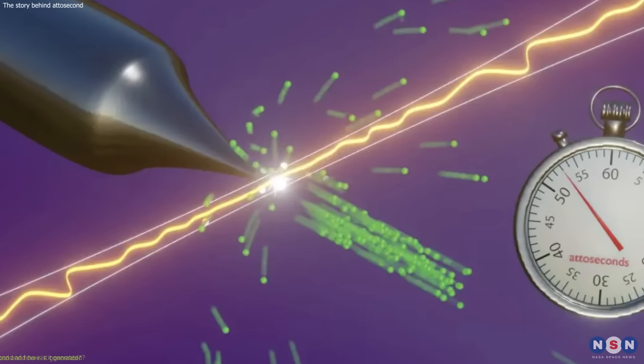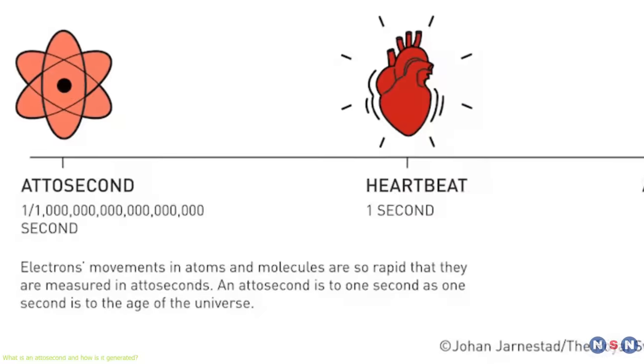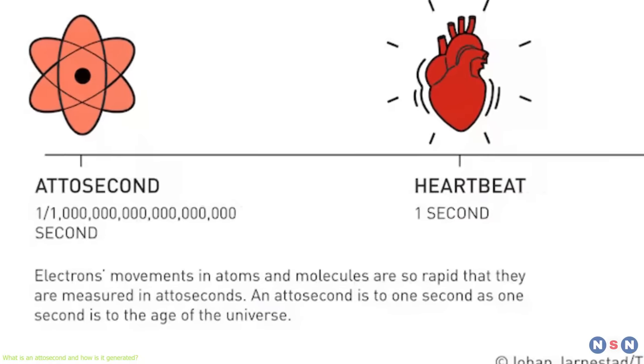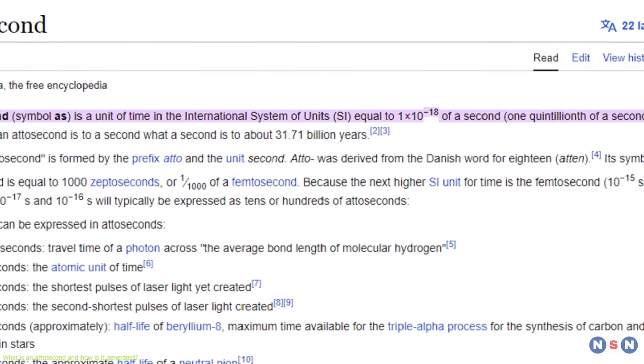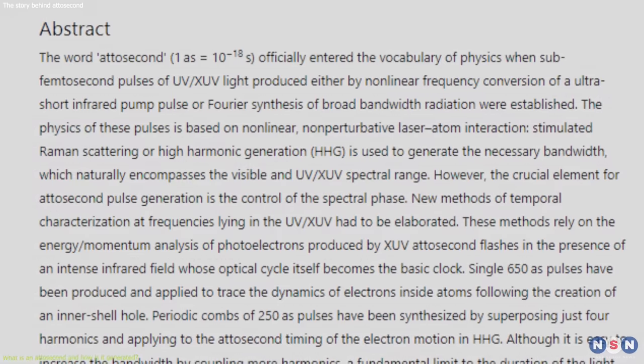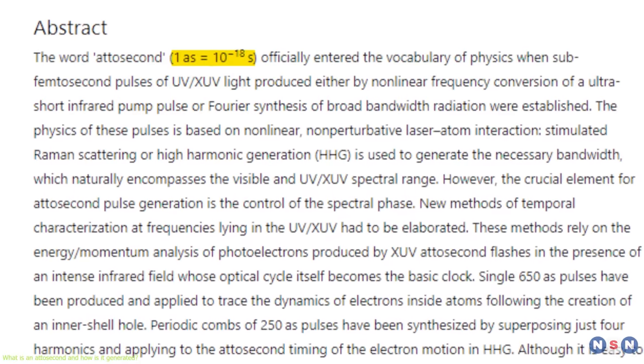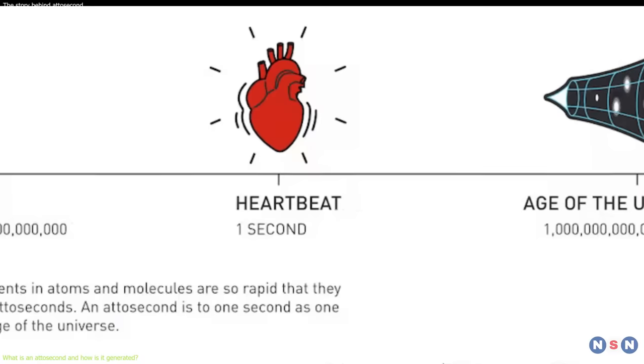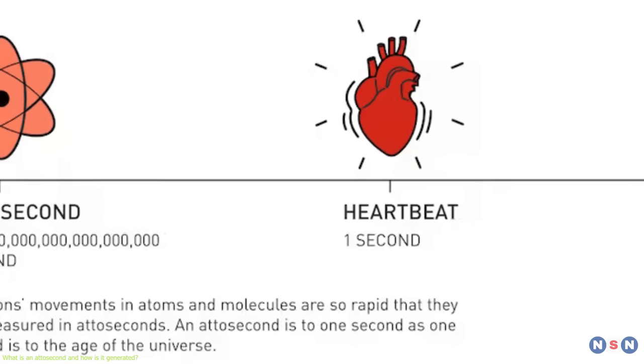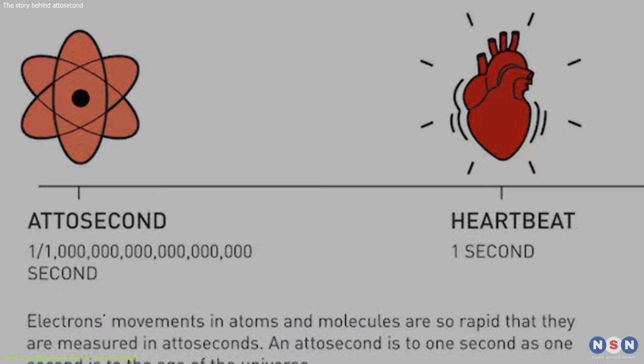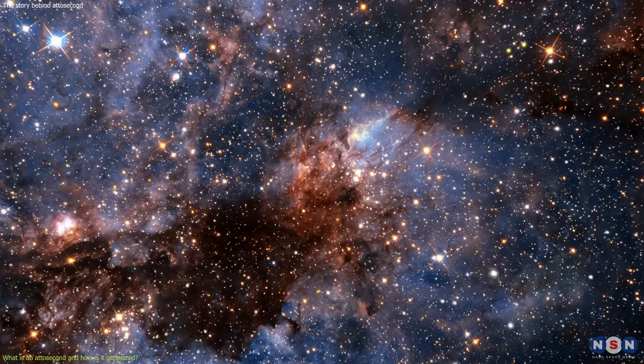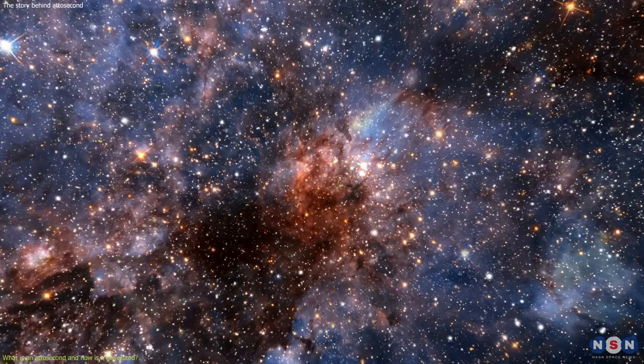To understand what attosecond spectroscopy is, we first need to know what an attosecond is. An attosecond is one billionth of a billionth of a second, or 10 to the power of negative 18 seconds. That's a very short time, so short that it's hard to imagine or compare with anything else. To give you some perspective, let's look at some other timescales that we are more familiar with.